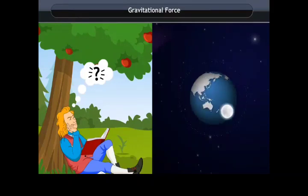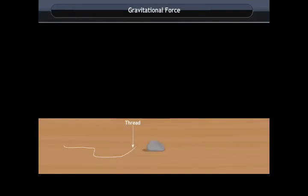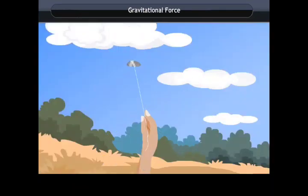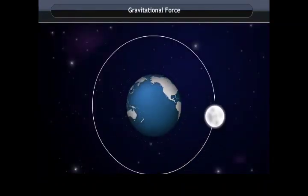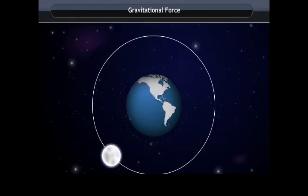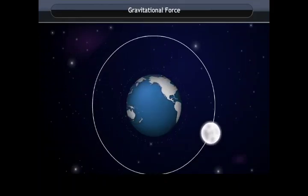To understand the motion of the Moon, take a piece of thread and tie a small stone at one end. Hold the other end and whirl it around. You will observe that it moves in an orbit — this is due to the tension in the thread which holds the stone in its orbit.